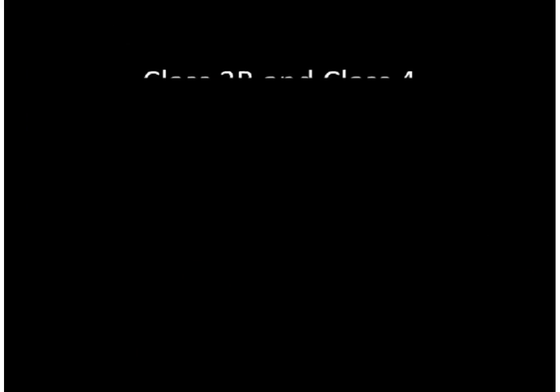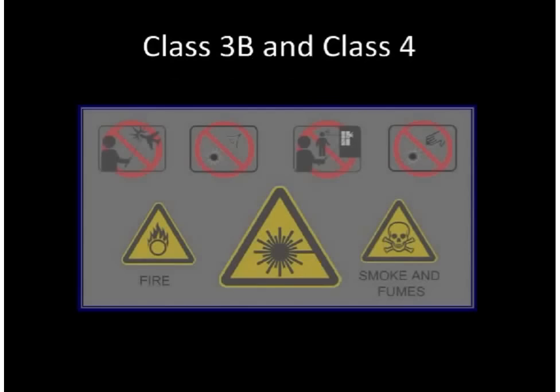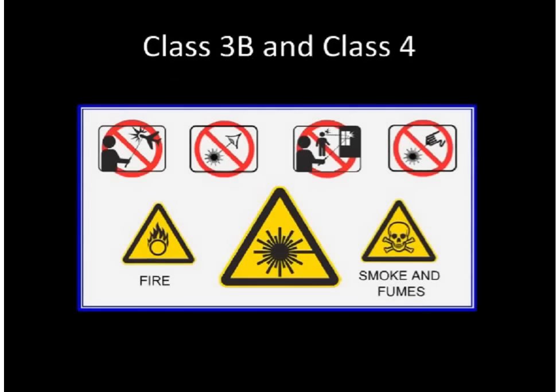Class 3B and 4 lasers are the most hazardous types of lasers and require the most controls when used. Regardless of the hazard classification, almost all lasers, including Class 1, that emit visible laser light can cause a distraction or temporarily impair a person's vision under the right circumstances.